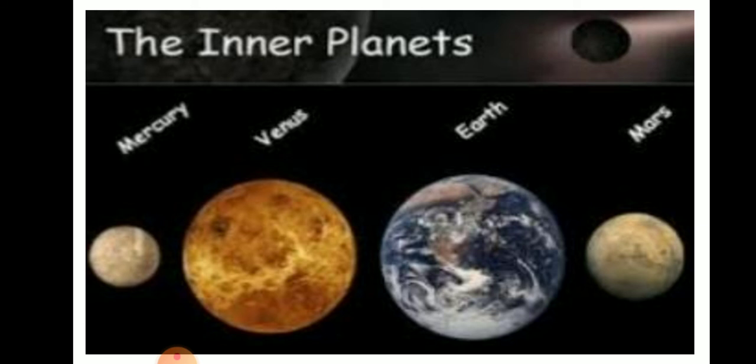Let us now discuss about Earth, which is the third planet from the sun. It is the only planet where we live. Seventy percent of Earth's surface is covered with water, which is why Earth is called the blue planet. Earth has only one moon, and the period of revolution is 365 days.